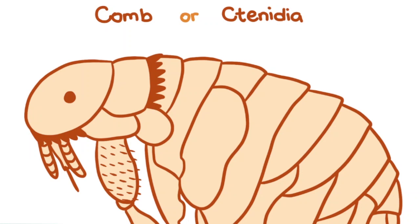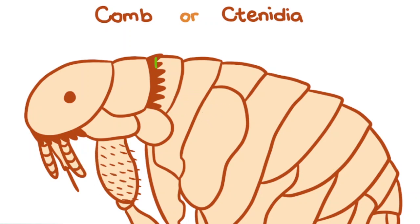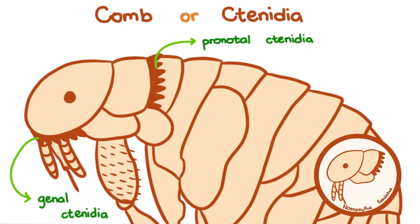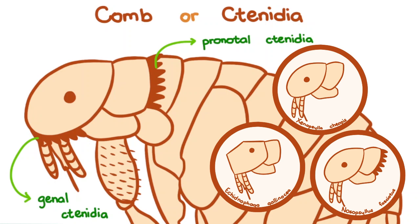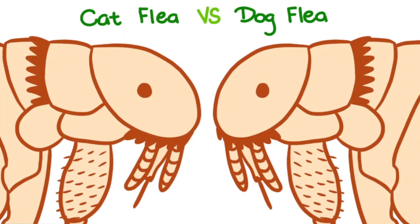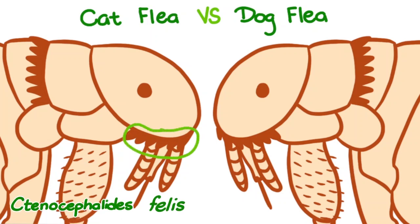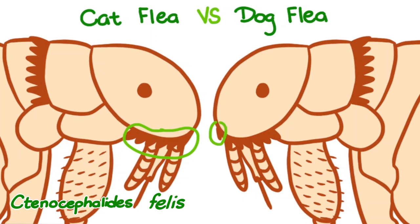Their comb or ctenidia are these little bristles that can be helpful for their identification. These ones here, behind the first thoracic segment, are the pronotal ctenidia, and these ones here, close to the mouth and cheeks, are the genal ctenidia. Other flea species can have only one or none of these features. To differentiate between the cat and dog flea, we look at their genal ctenidia. If they're about the same size, it's Ctenocephalides felis. If the first one is shorter than all the rest, it's Ctenocephalides canis.